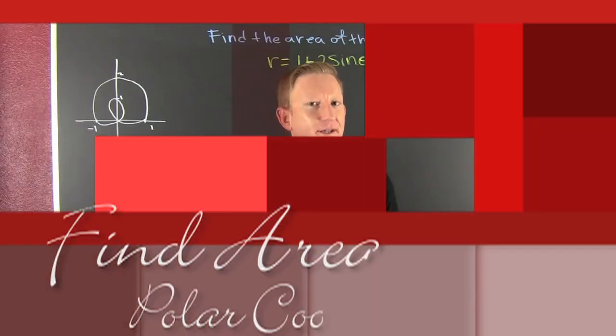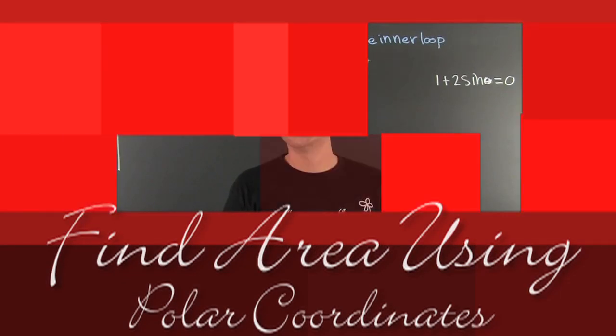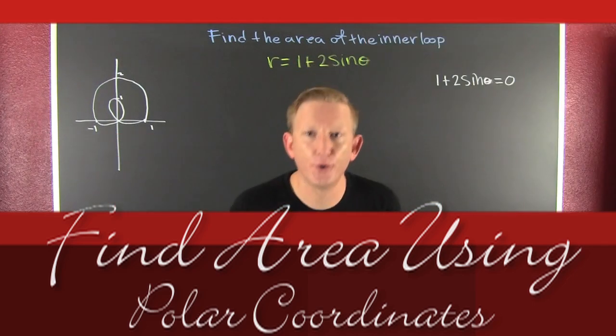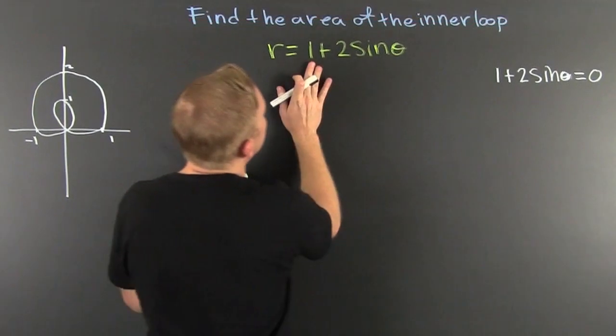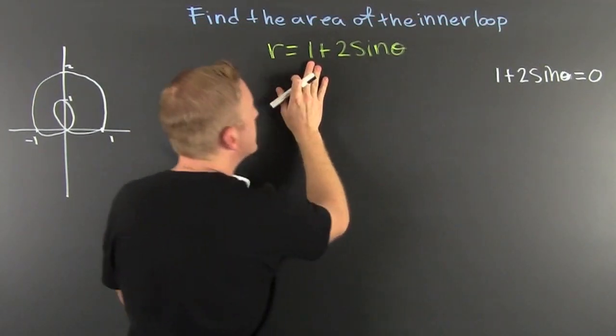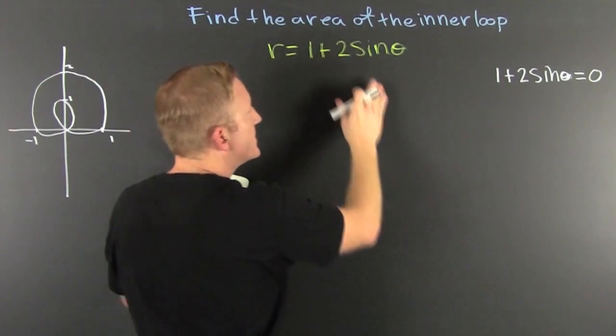All right, let's find some areas. Some areas with polar coordinates. Okay, I'm looking for the area of this guy, where r is equal to 1 plus 2 times the sine of theta.